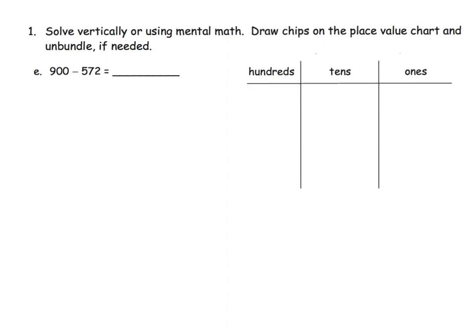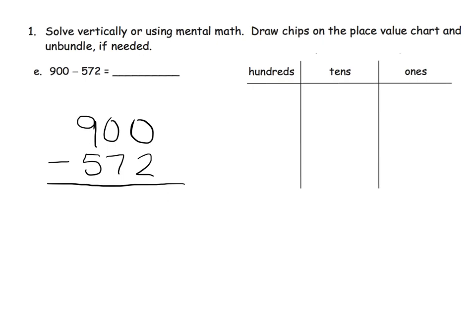Let's practice the vertical method again. We're going to do 900 take away 572. Right away we see we have no ones and we're supposed to take away 2 ones, and we have no tens either. So we'll have to go all the way to the hundreds column. Actually, let's do the place value chart first — I think that will make it make a lot of sense. Let's start by modeling 900.